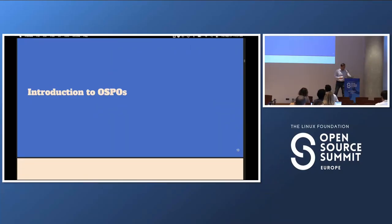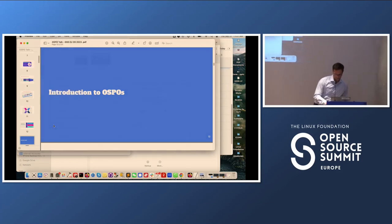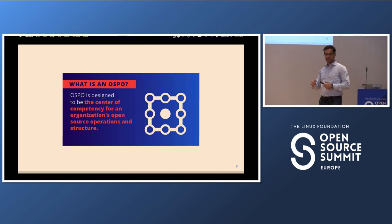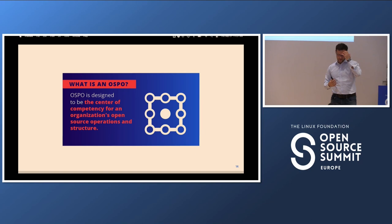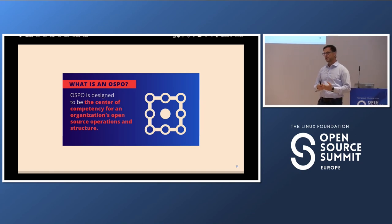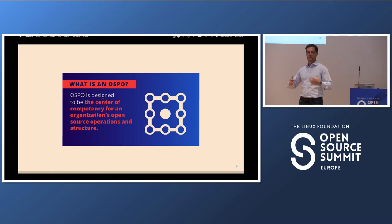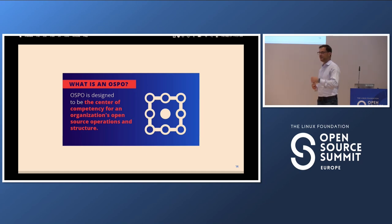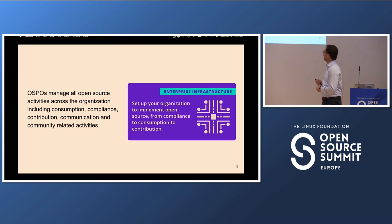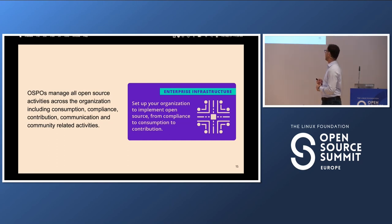Introduction to OSPOs. From my perspective, having set up and managed a few of them, an OSPO is simply a program office that manages all of a company's interactions with open source — including using open source, contributing, compliance, community, events, open source foundations, and open standards. Anything that touches open source goes through that office, which acts as the orchestrator of all activities across the whole company — pretty much the central operation of open source within any given organization.